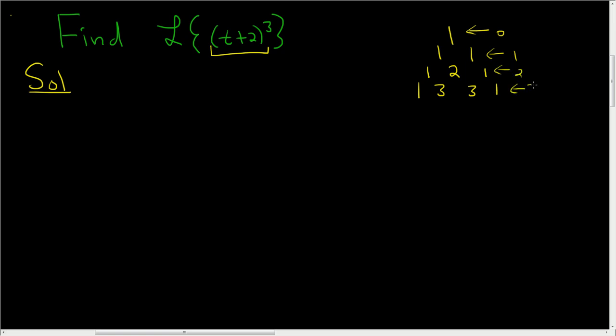So this gives us the coefficients when we expand this. So (t + 2) cubed, here's how you do it. It's going to be 1 times t to the third, we start at 3, times 2 to the 0, and then plus 3. The 3 comes from here, and then t squared, so you go down, 3, 2, and then times 2 to the 1.